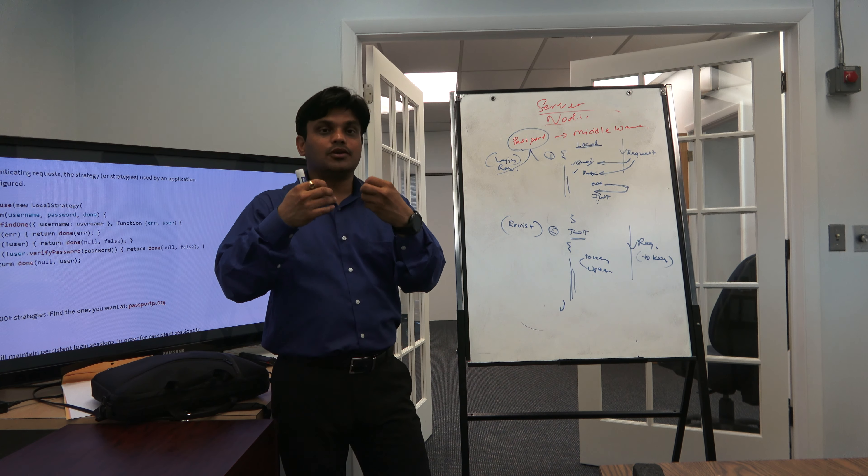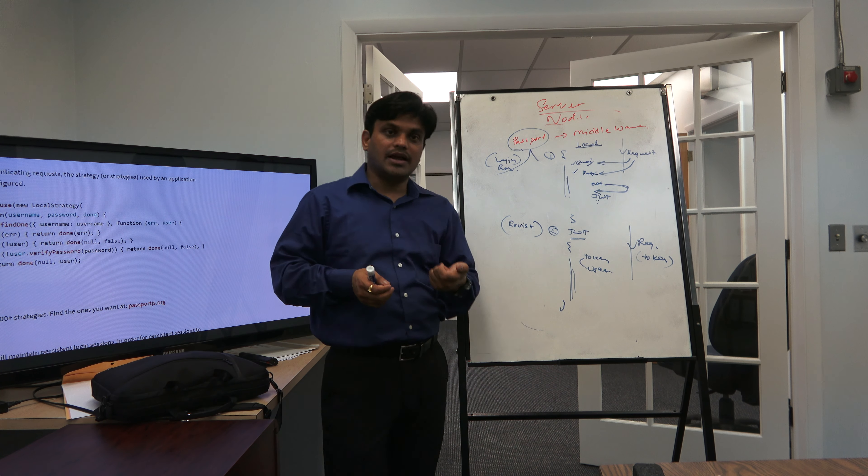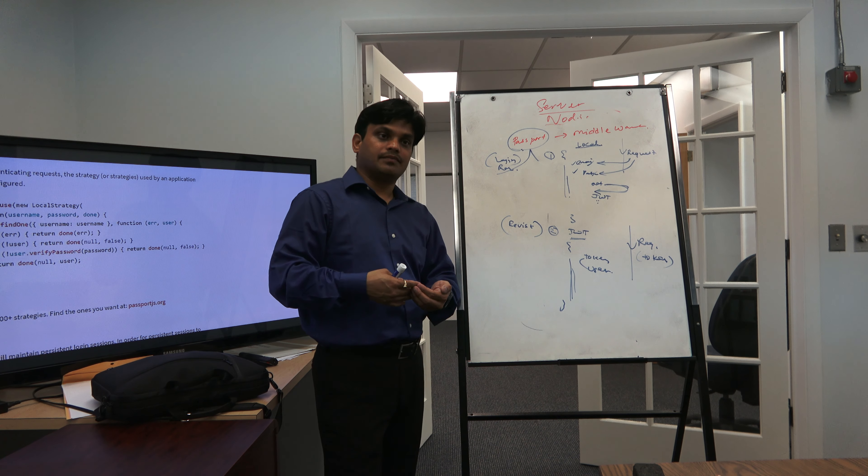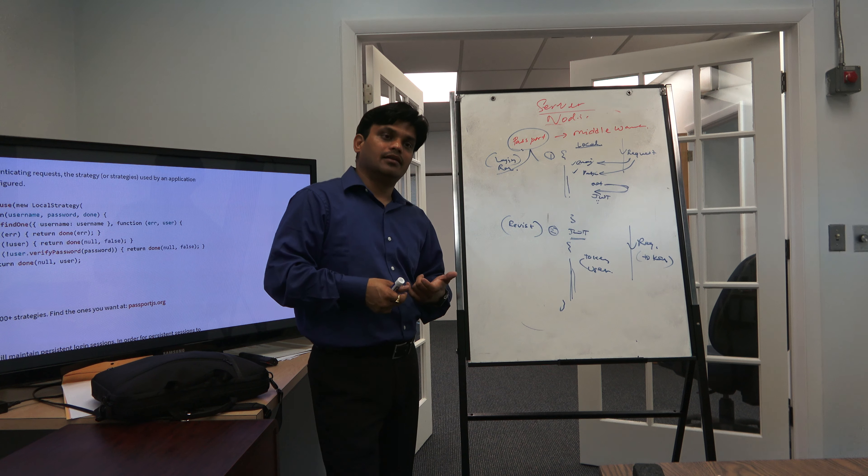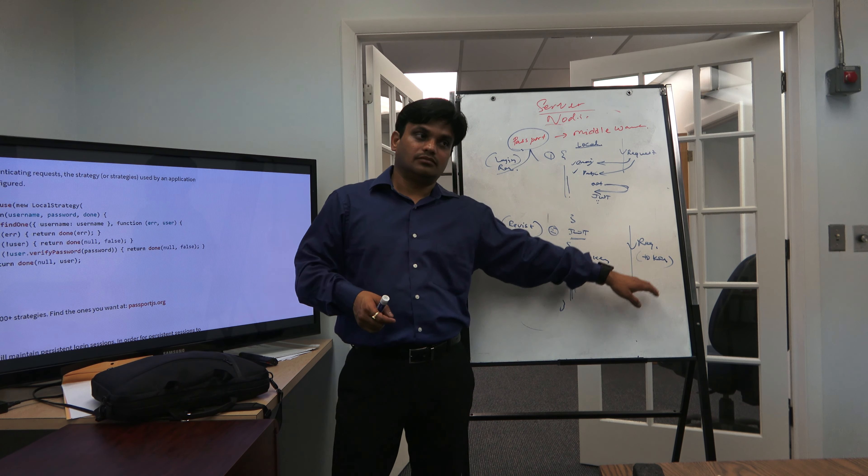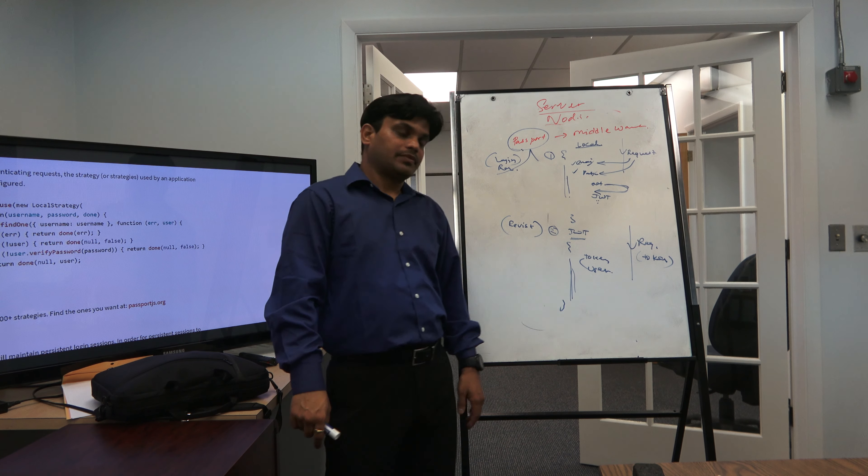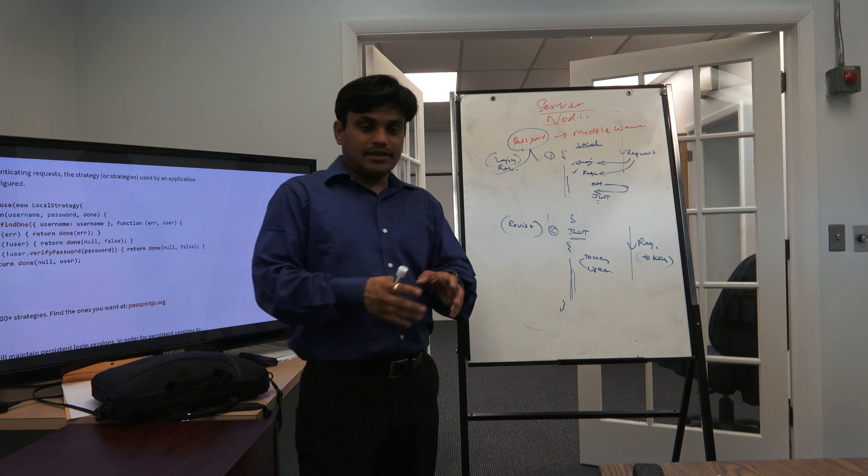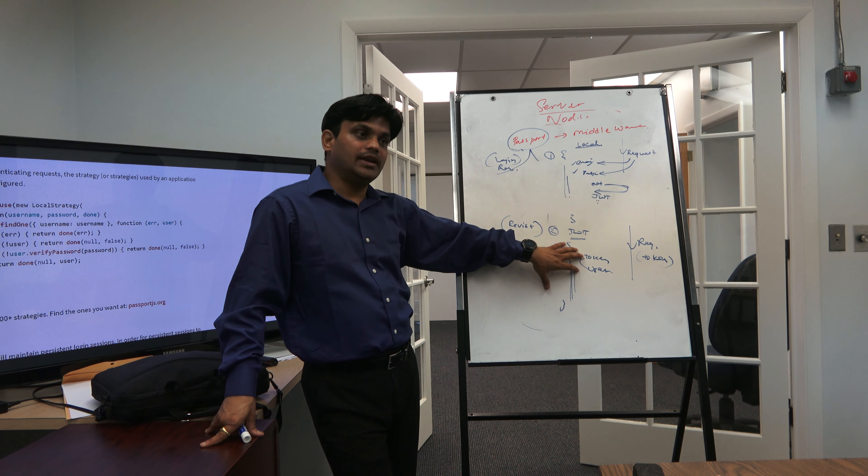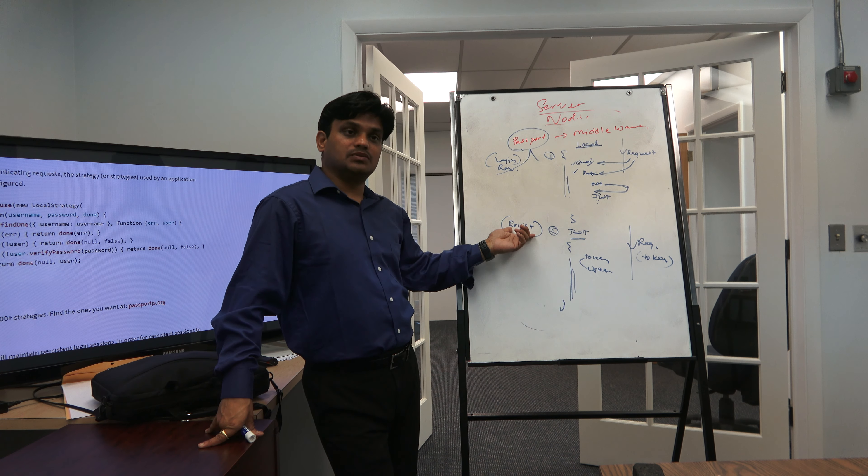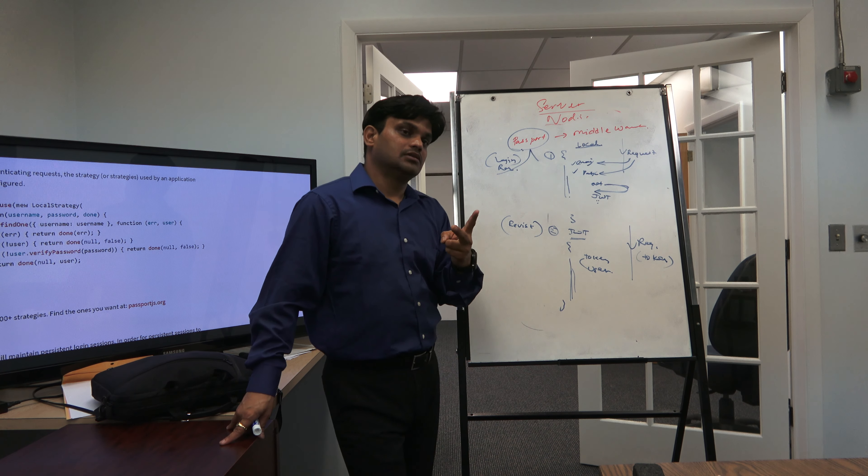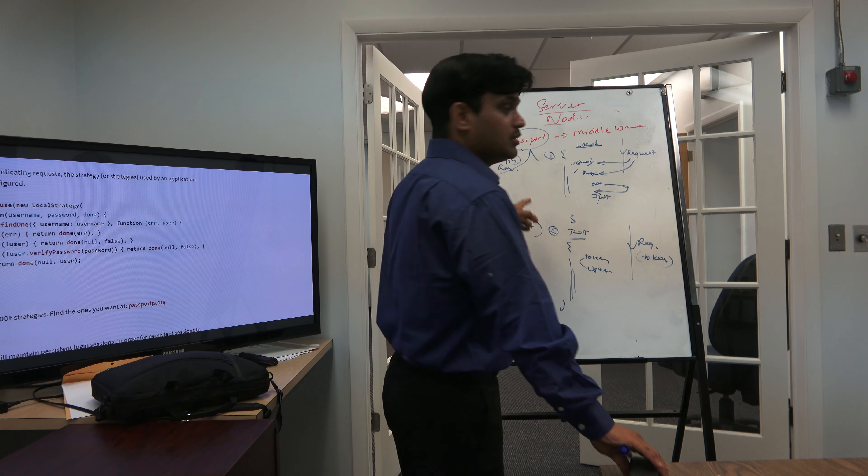Once you have a customer ID or user ID, you can fetch his orders or anything. But how do you get customer ID? Customer ID is coming as a form of token. So basically there are two requirements: one is how to login, and one is how to validate that this person who is coming to my server is valid.